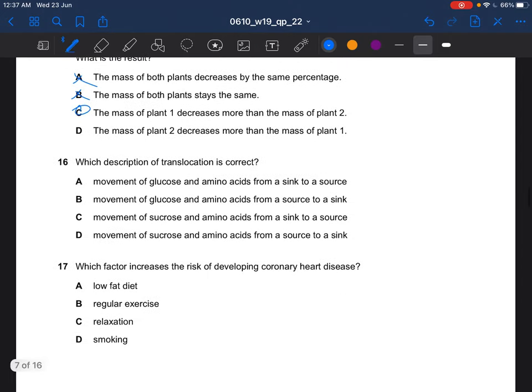Next question. Which description of translocation is correct? Translocation is the movement of sucrose and amino acids. It's not glucose, it is sucrose, from source to sink. So the answer would be D. Source is the region of production, while sink is the region of storage or the region where they are used in respiration or growth.